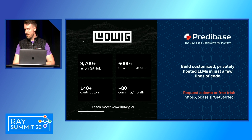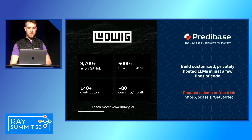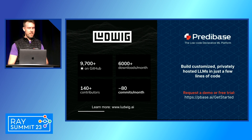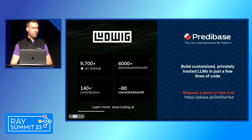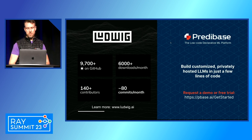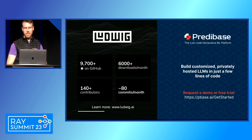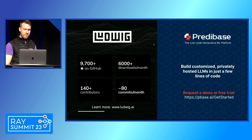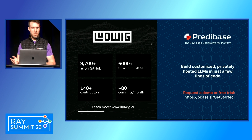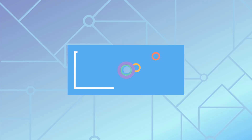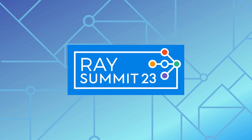That's all for today. Please check out Ludwig if you're interested in fine tuning for your own tasks. It's a popular project with over 9,700 stars on GitHub and 140-plus contributors. If you're also interested in a managed solution for fine tuning and serving large language models and other task-specific specialized models, check out Predibase — a low-code platform that enables you to do all of this with just a few lines of code. Thank you very much.